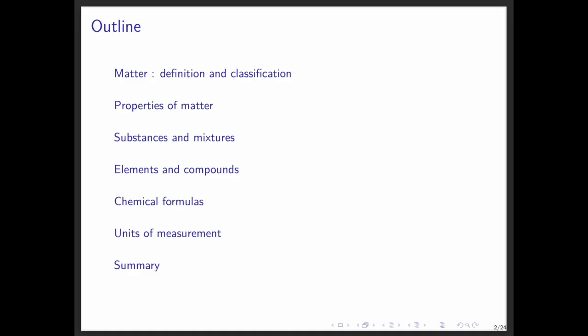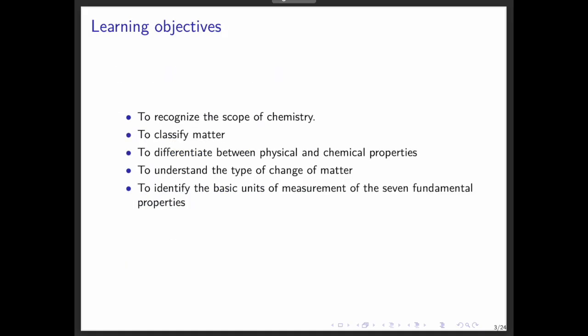Before we dive in, let's look first at our learning objectives. By the end of this lecture, you should be able to recognize the scope of chemistry, classify matter into its different forms, differentiate between physical and chemical properties, understand the types of changes matter can undergo, and identify the basic units of measurement.